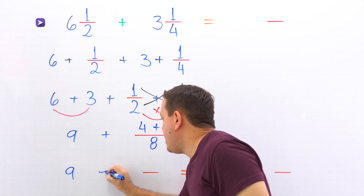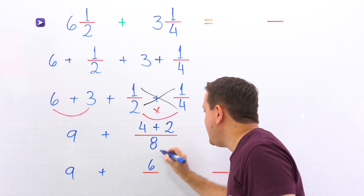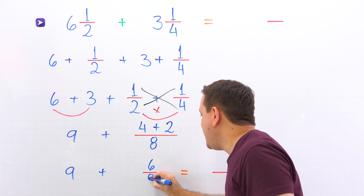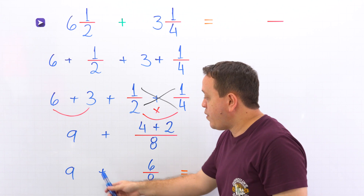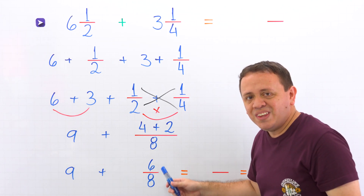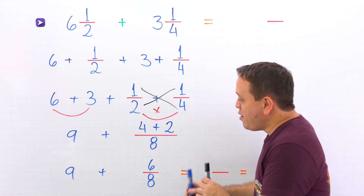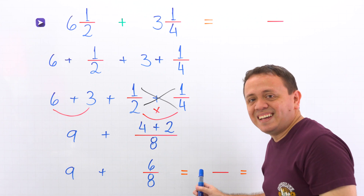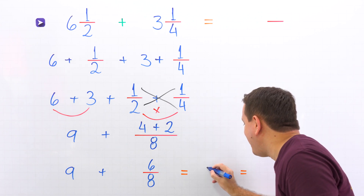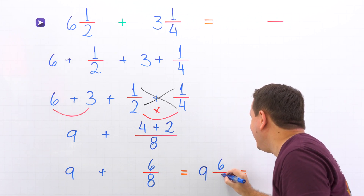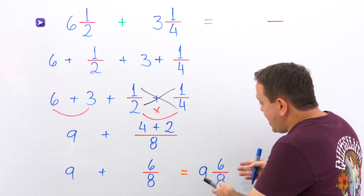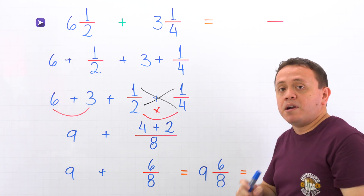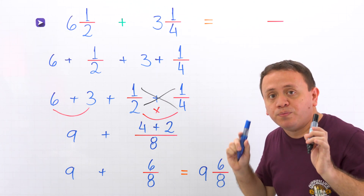9 plus 4 plus 2 is 6. The denominator stays the same. In this line, we have the sum of a whole number and a proper fraction. So we can rewrite the sum of 9 and 6 eighths as the mixed number 9 and 6 eighths. However, we are not done yet — don't forget that the fraction in the resulting mixed number must be in simplest form.